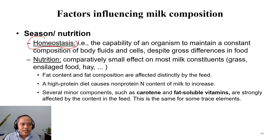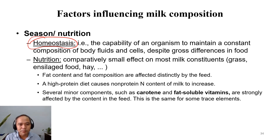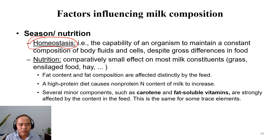We also discuss homeostasis. Homeostasis is a mechanism that every living organism has to control the composition of fluid in the body — including milk, blood, and fluid in the muscles — regardless of what they eat. Whatever the animal eats, the composition of the fluid in the body is controlled as much as possible. Even if a cow drinks a lot of water, the milk may be slightly more diluted, but not very much, because the body must maintain fluid composition within a certain range.